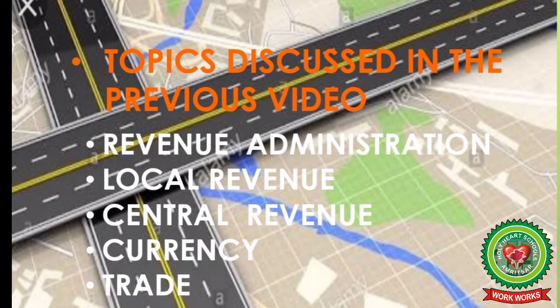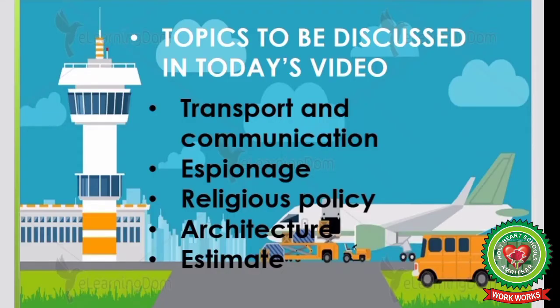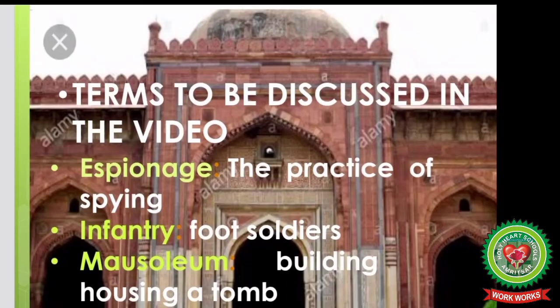Previous topics included local revenue, central revenue, currency and trade. Let's recall the terms: jizya, khams, patta, qabuliyat, lenient, muezzin. Topics to be discussed in today's video are transport and communication, espionage, religious policy, and architecture. Key terms include espionage — the practice of spying.